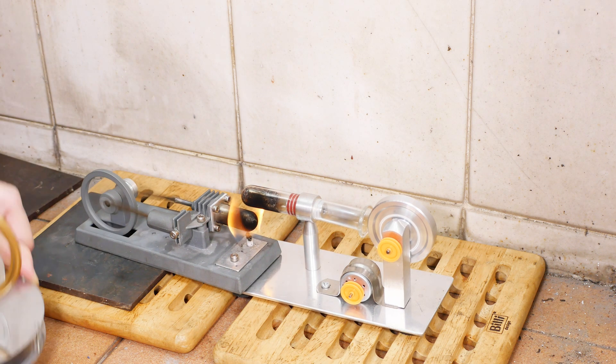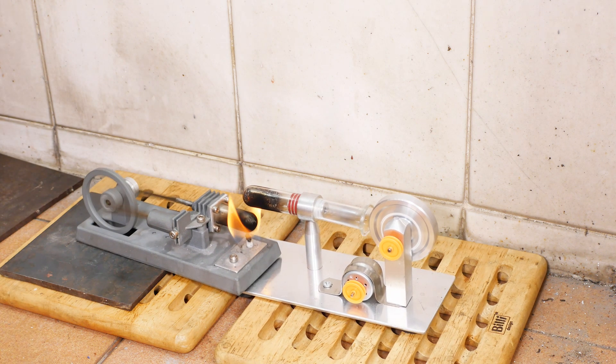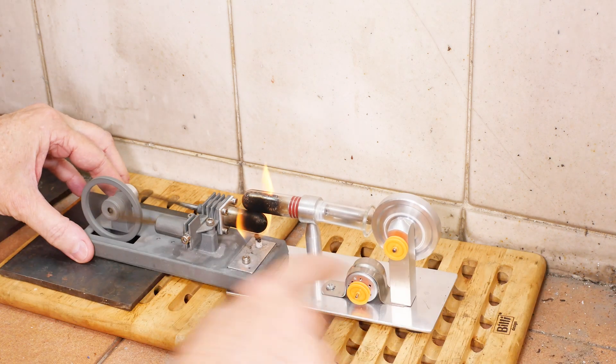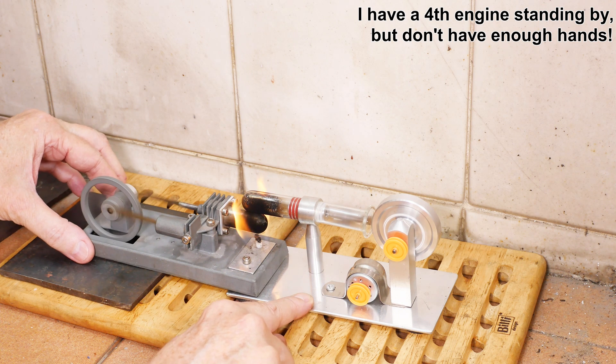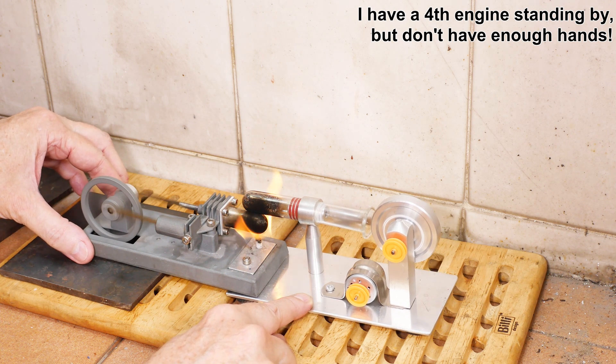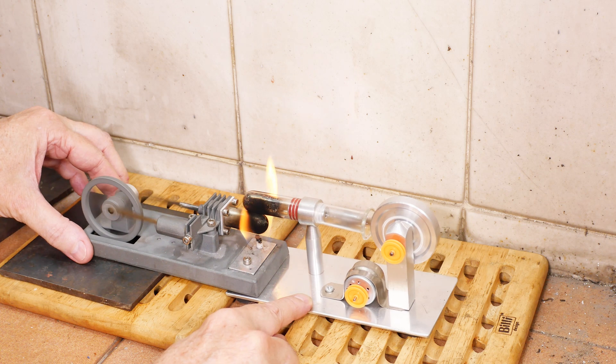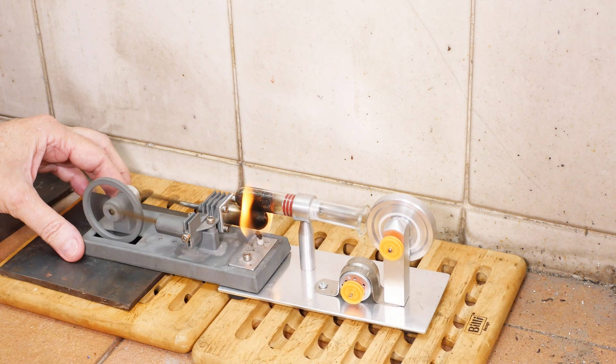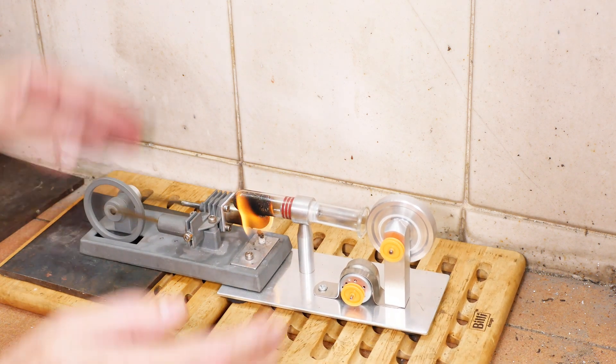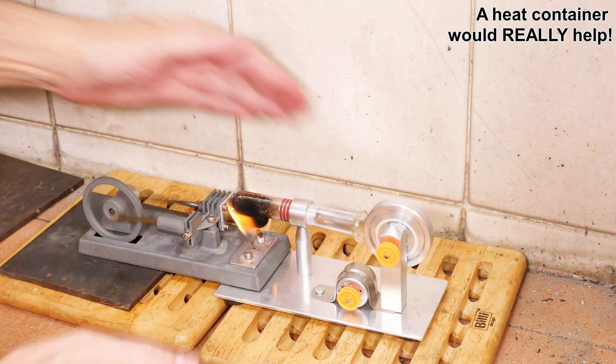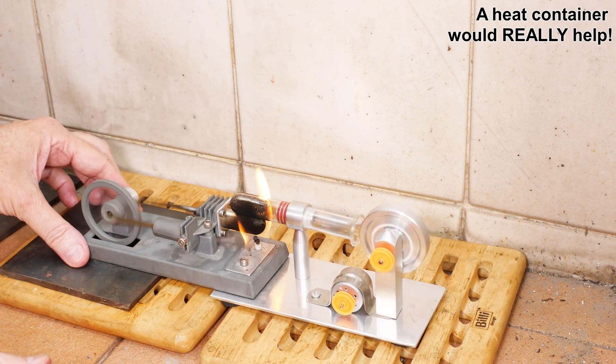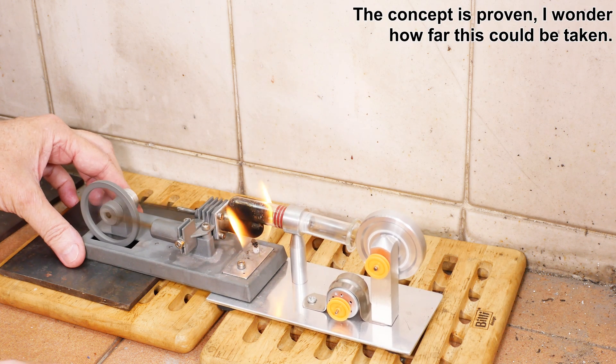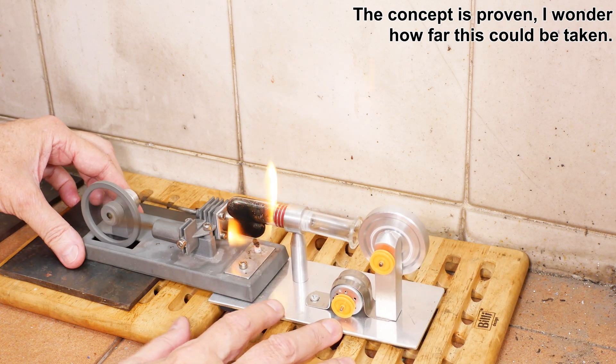But as you can see, we can run at least two and maybe two and a half engines. And if I had another one of these, I'm sure I could run it from the heat. So we could keep increasing our efficiency by using just one flame and multiple engines. And then if we had a containment for that flame to preserve the heat even better, we could probably improve the efficiency. We might be able to run five or six engines from just one flame.